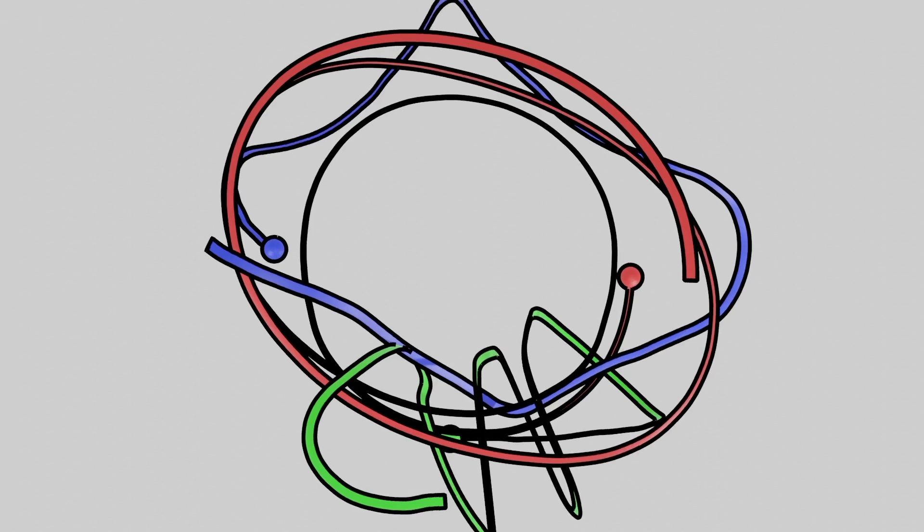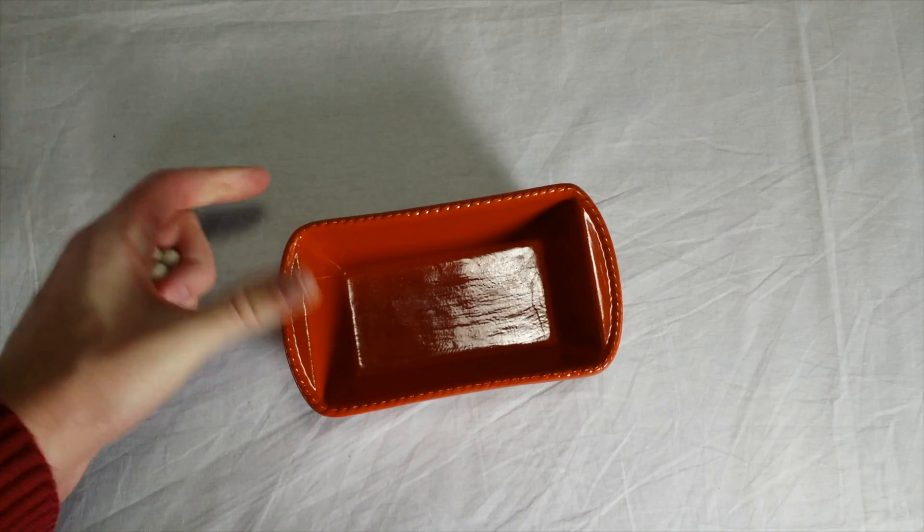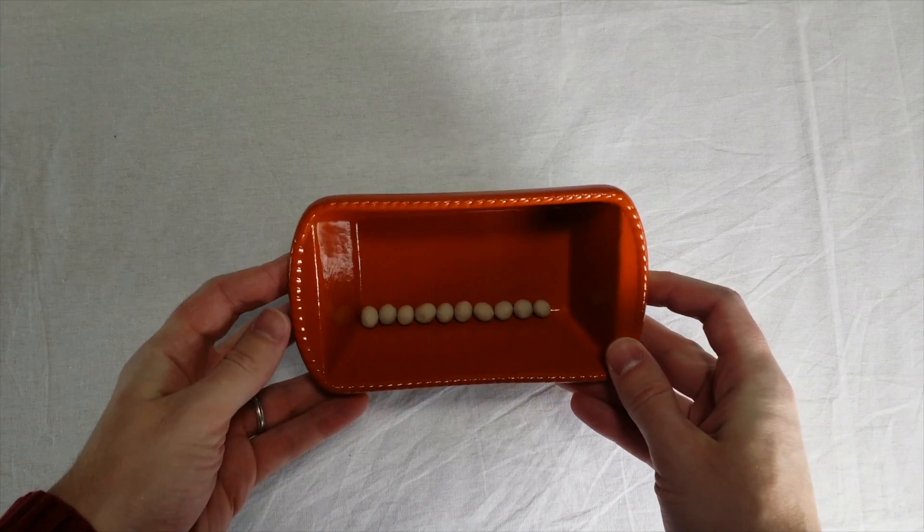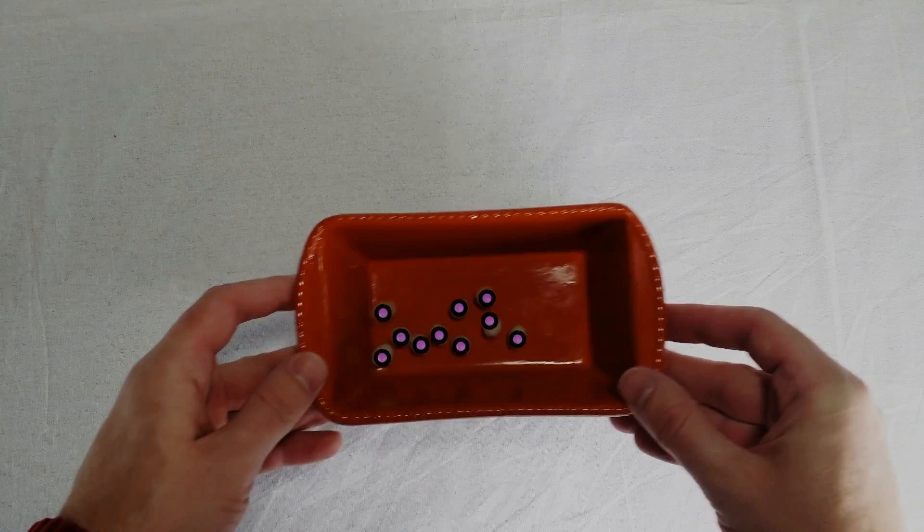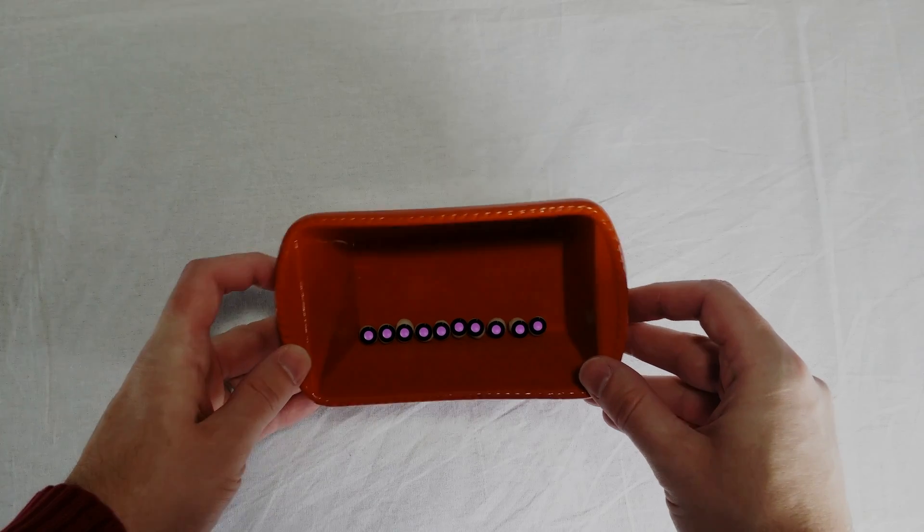Hey, let's do a real-world example. I put ten beads in this little thing and jiggled them around a little. I made them all stop at the same places where they started. So this makes a loop in the configuration space of ten points. And that motion determines a ten-stranded braid.